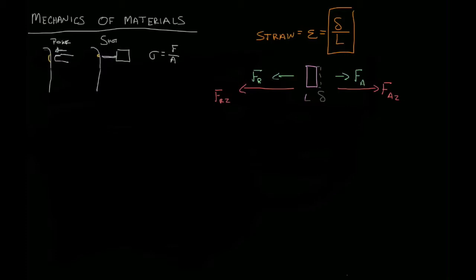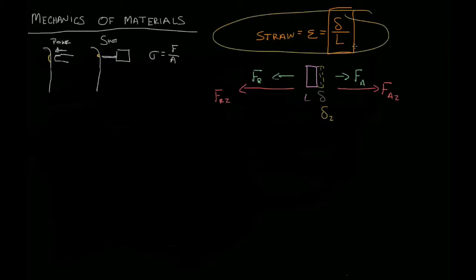And as a result we have a strain that now — that material is acting like a spring — so it's going to stretch a little bit more. You're going to have some modified delta. Now the original length is the same, it's just the delta that's changed. So in our strain equation, we're going to see the strain change. We increase the force and the strain itself will change.